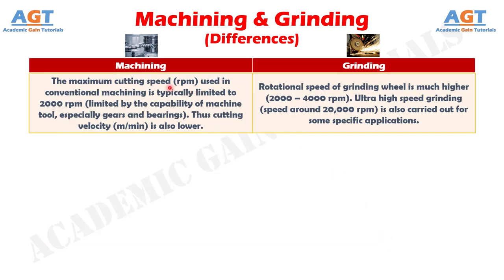Number 8: the maximum cutting speed in conventional machining is typically limited to 2000 RPM, limited by the capability of machine tool, especially gears and bearings, so cutting velocity in meters per minute is also lower. Whereas the rotational speed of a grinding wheel is much higher, 2000 to 4000 RPM. Ultra high speed grinding at around 20,000 RPM is also carried out for some specific applications.